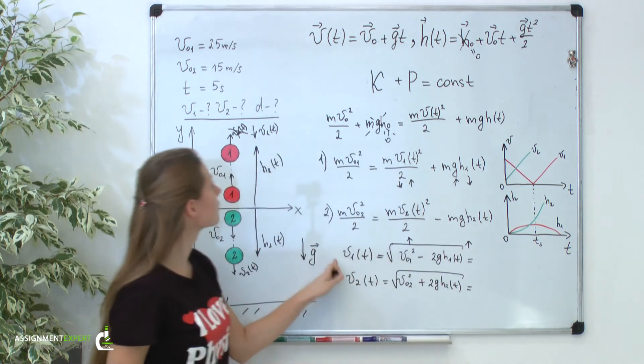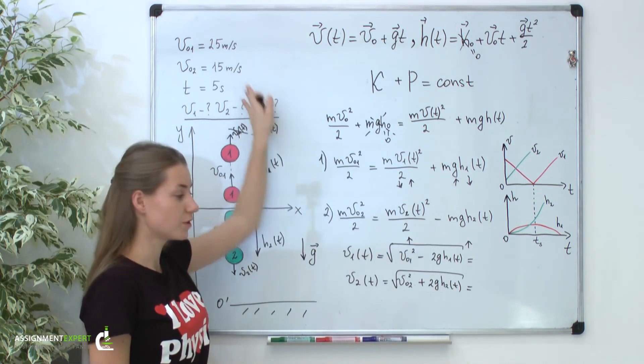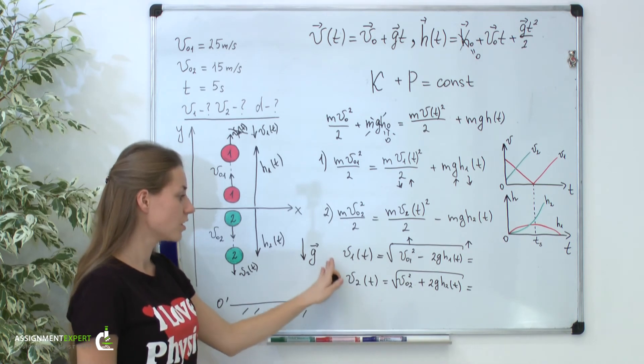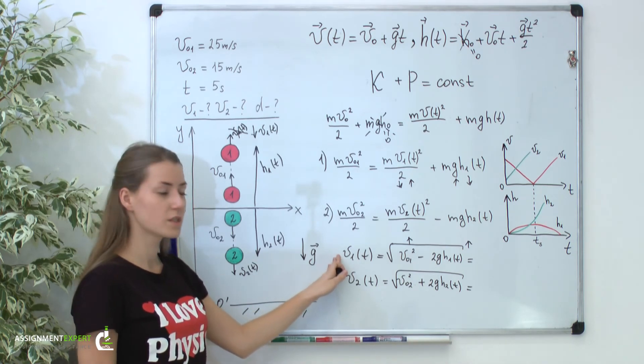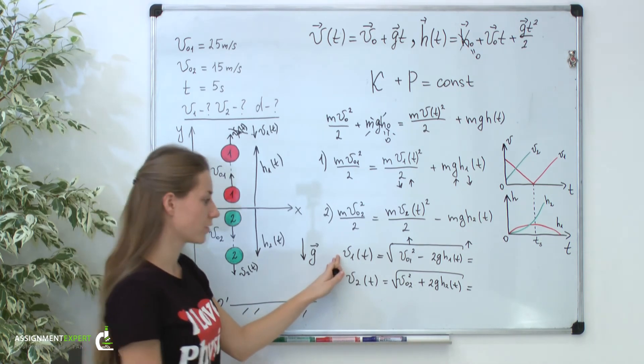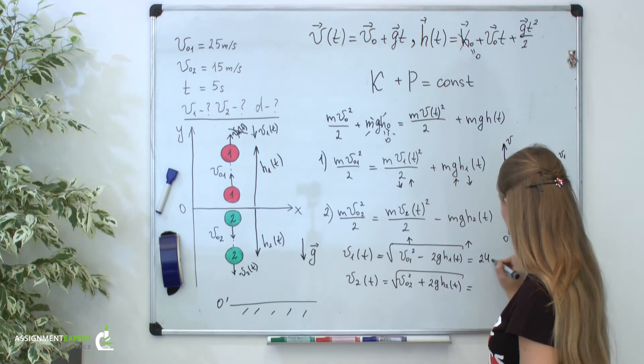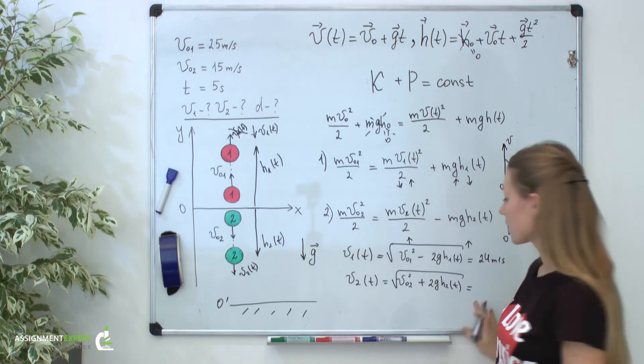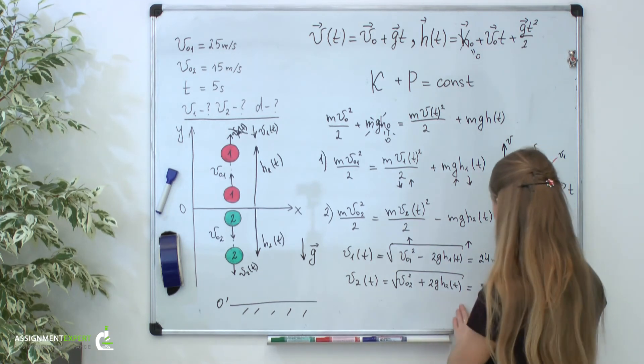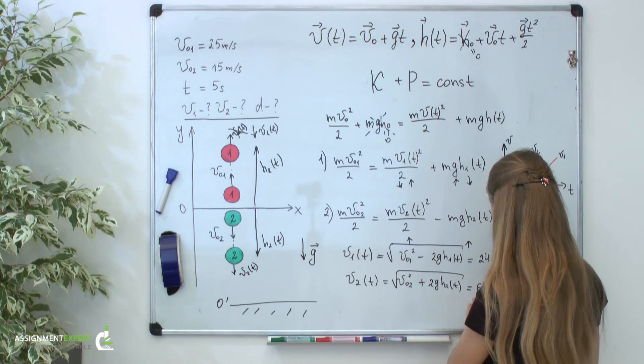If you substitute all the numerical quantities from our statement to these equations, you will get the same velocities as we got in our first part. For the first velocity we get 24 meters per second, and for the second it is 64 meters per second.